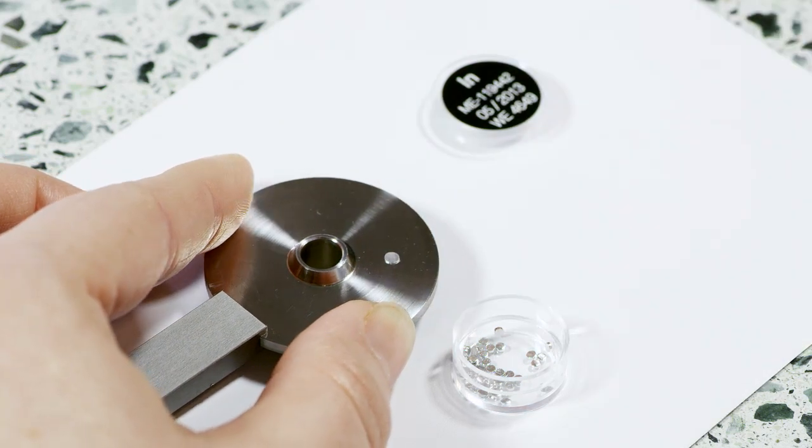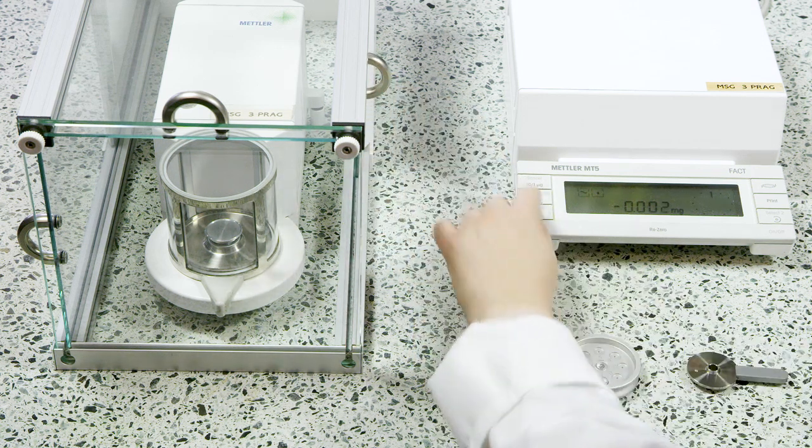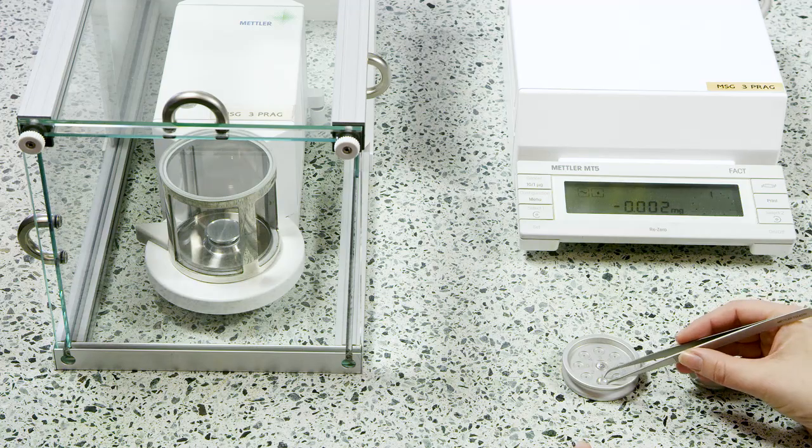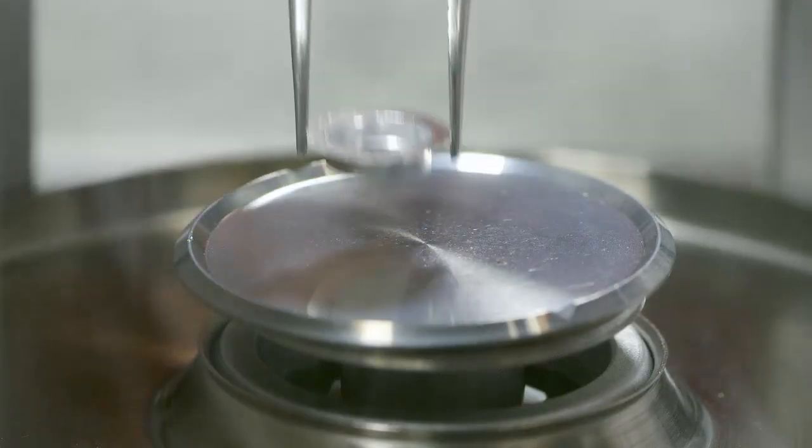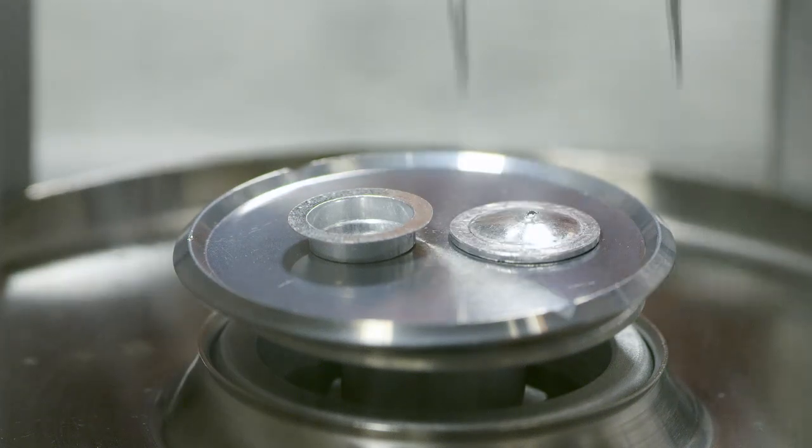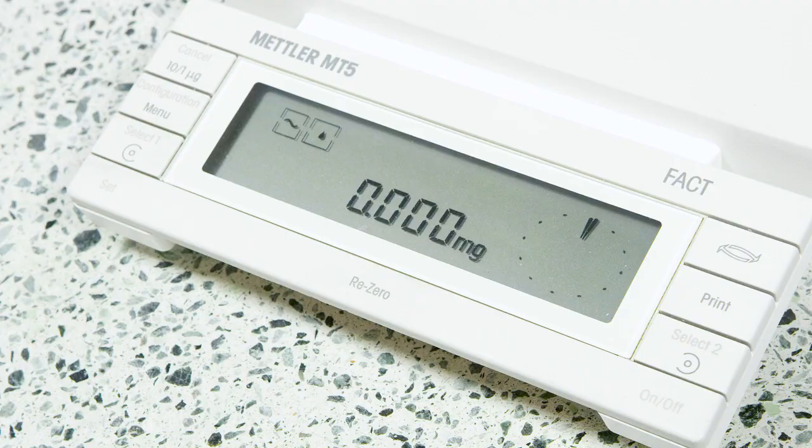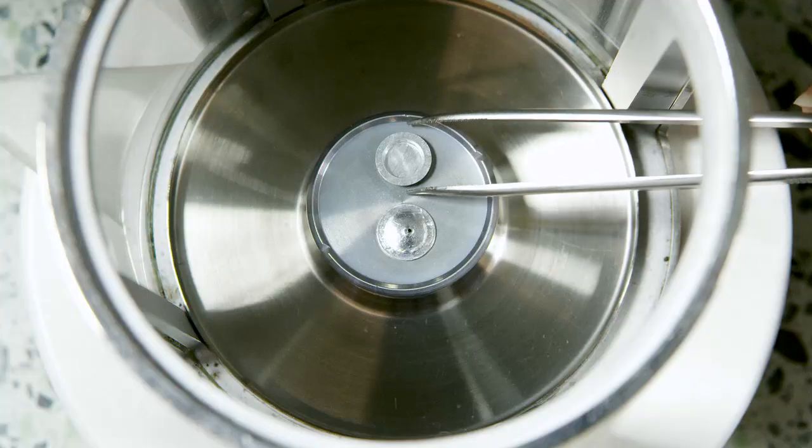For heat flow calibration, it is necessary to determine the accurate weight of the sample because the melting enthalpy taken is a value normalized by weight. Place the crucible and lid on the balance, tare, and remove the crucible and the lid from the balance.